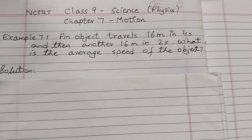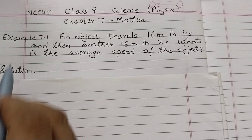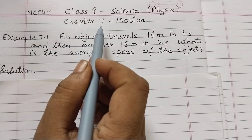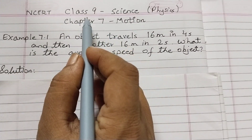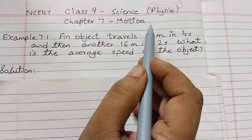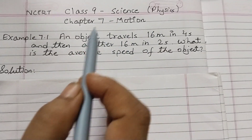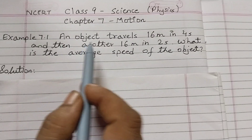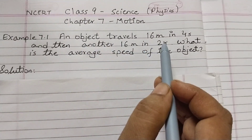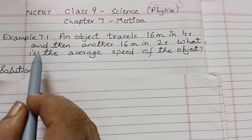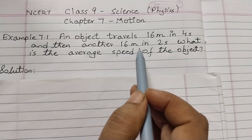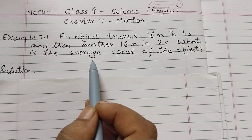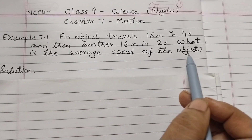Hello students, today we shall discuss example 7.1 from chapter 7, Motion, of class 9 physics. This is the first science video I am making on this channel. An object travels 16 meters in 4 seconds and then another 16 meters in 2 seconds. What is the average speed of the object?